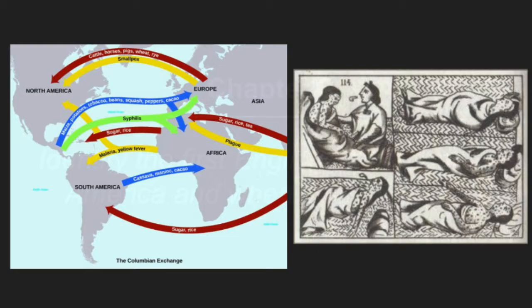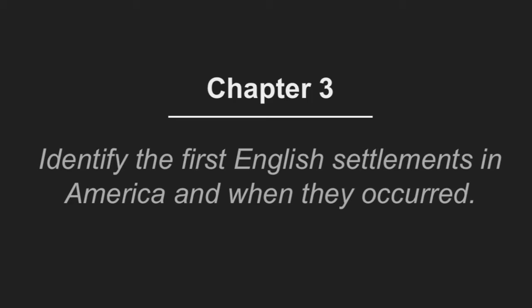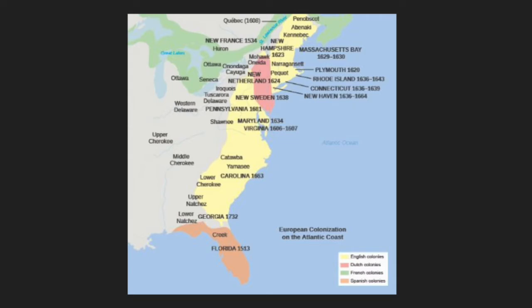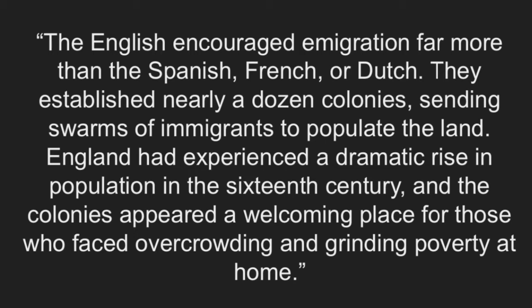Question 3: Identify the first English settlements in America and when they occurred. During the 17th century, England got to work and began settling in America. They wasted no time in catching up and surpassing the number of settlements created by other European nations. According to U.S. History by OpenStax, the English encouraged immigration far more than the Spanish, French, or Dutch. They established nearly a dozen colonies, sending swarms of immigrants to populate the land. England had experienced a dramatic rise in population in the 16th century, and the colonies appeared a welcoming place for those who faced overcrowding and grinding poverty at home.